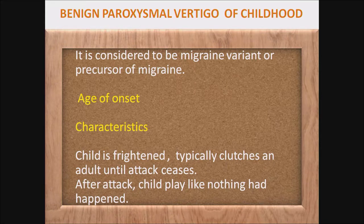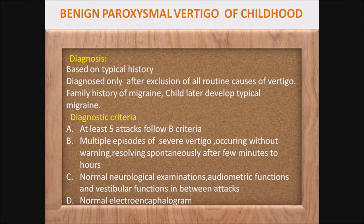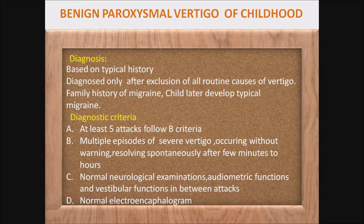BPVOC is always associated with sweating, but nausea, vomiting, and nystagmus are very rarely seen. The child is frightened and typically clutches an adult until the attack ceases. After the attack, the child plays as if nothing had happened. Diagnosis is based on typical history because all otolaryngological, neurological, and radiological examinations are normal. It is diagnosed only after exclusion of all routine causes of vertigo. Family history of migraine is usually present in the mother, and the child later develops typical migraine.